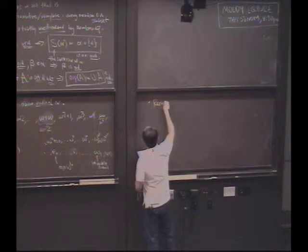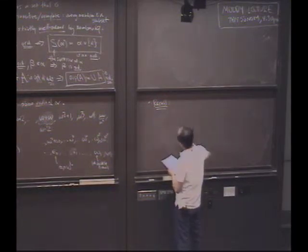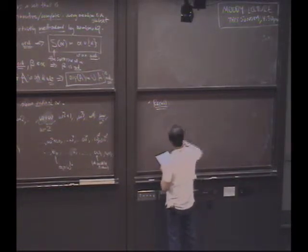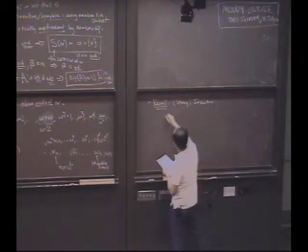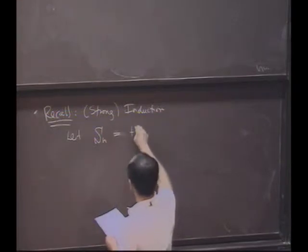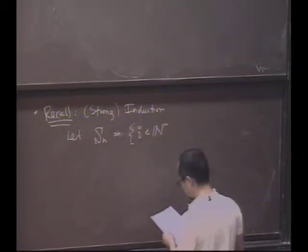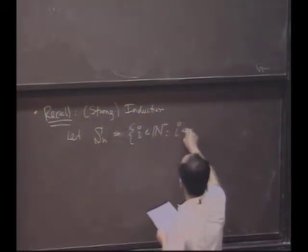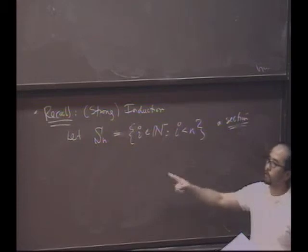So let me just have you recall when we talked about induction. Well, how did we define it? Well, we used the principle of induction. And I'm just going to give you a version that's strong induction. It would be the one that's most useful for us. So I'm going to let S sub n be what's called the section. So it's the set of all numbers in the natural numbers. This is just for regular induction, where i is less than n. It's called a section.